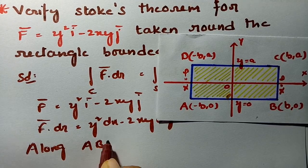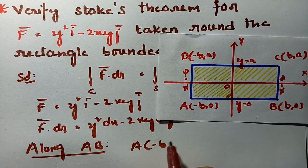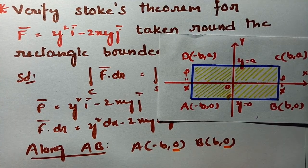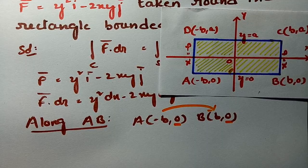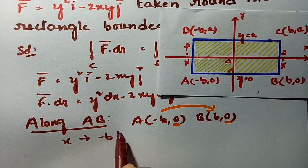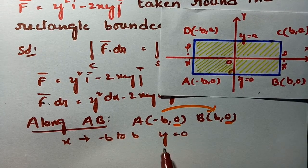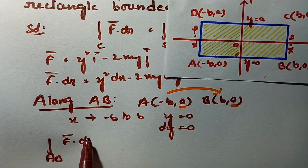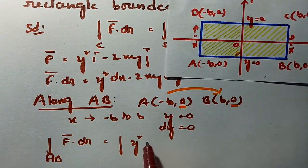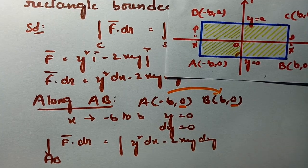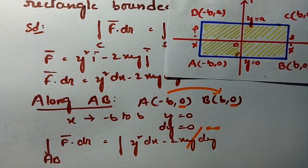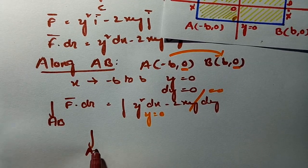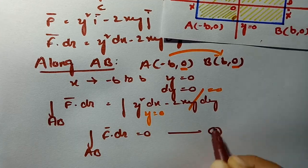Along AB: A = (-b, 0) and B = (b, 0). Here y is constant at 0, so dy = 0, and x varies from -b to +b. Substituting dy = 0 and y = 0 into y² dx - 2xy dy, both terms vanish. Therefore, the integral along AB equals 0.